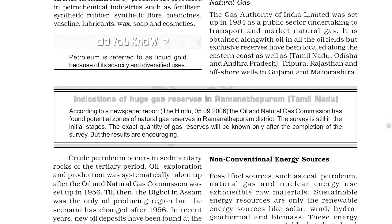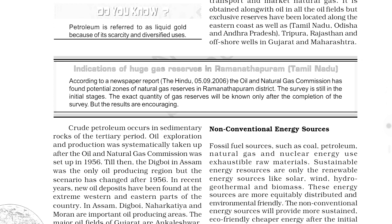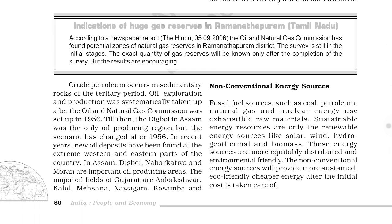Next is non-conventional sources of energy. First is nuclear energy resources — uranium and thorium are used for generation of nuclear energy. Uranium deposits are found in Dharwar rocks: Singhbhum copper belt, Udaipur, Alwar, Jhunjhunu, Durg, Maharashtra, Himachal Pradesh, etc. Thorium deposits are found in monazite and ilmenite sand.